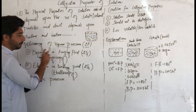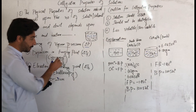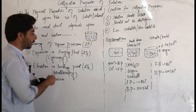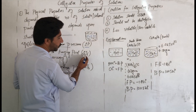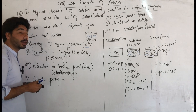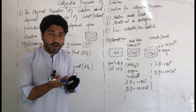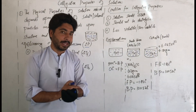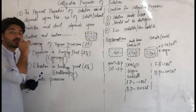Number two is depression in freezing point. The freezing point of a solution decreases — that decrease is called depression in freezing point. This is also called cryoscopy. For example, pure water has a freezing point of zero degrees centigrade. When a solute is added to water, the freezing point decreases — that is depression in freezing point.